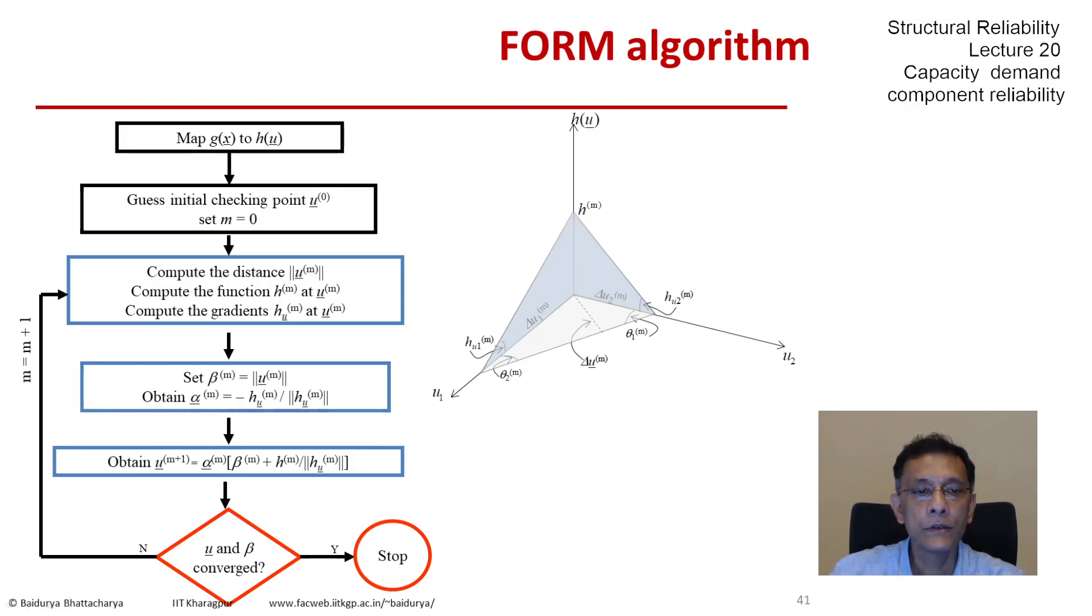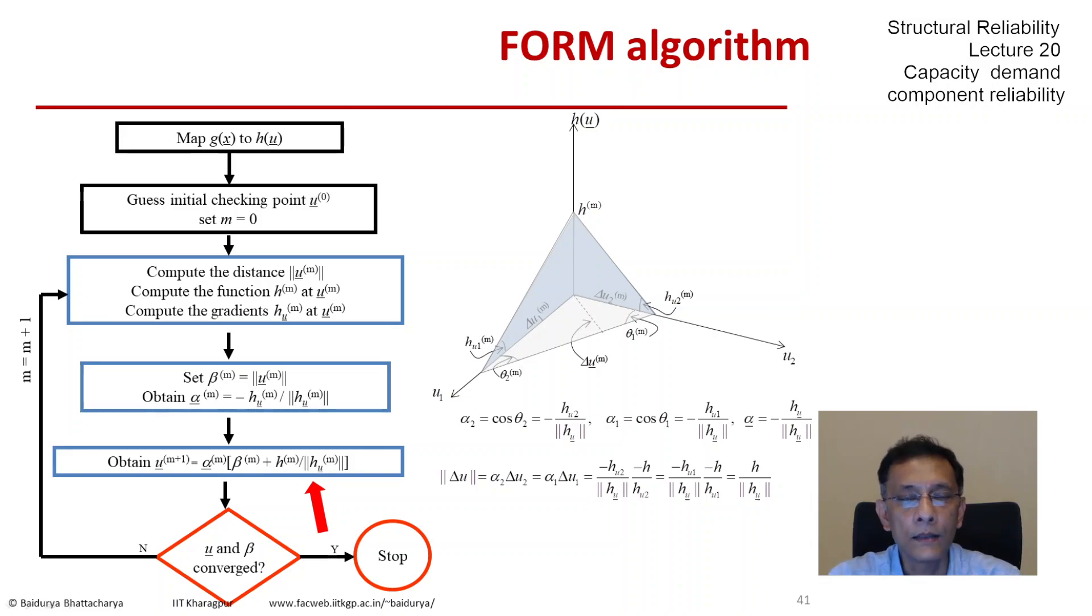Continuing this way, we can define alpha one also. Alpha two is cosine of theta two, alpha one is cosine of theta one. We can generalize this: the alpha vector is the gradient vector of h with respect to u, normalized by the norm of the gradients. That's the arrow you see on the left, the red arrow that I just pointed. That is the reason behind why we compute alpha that way.